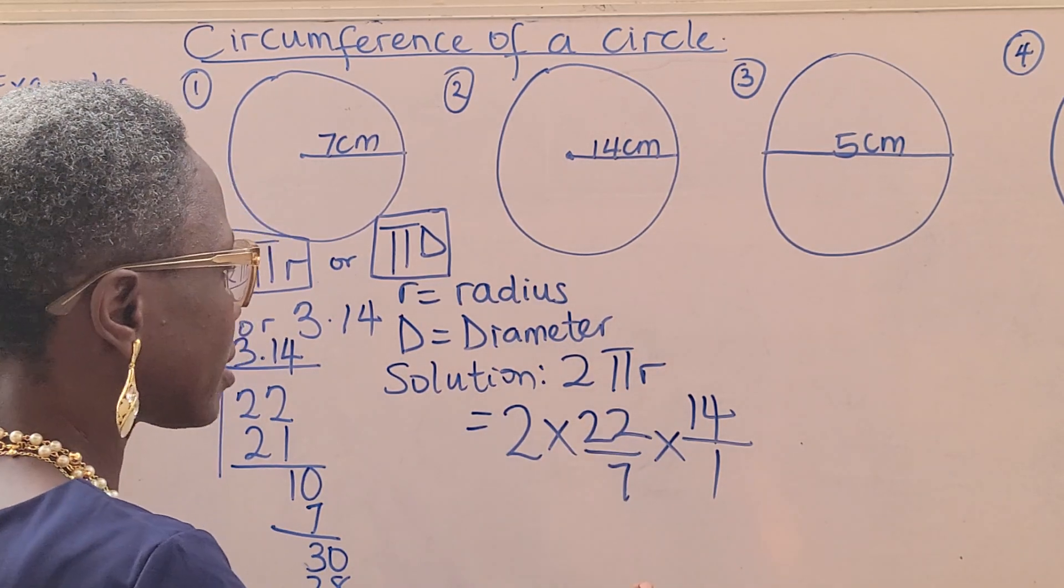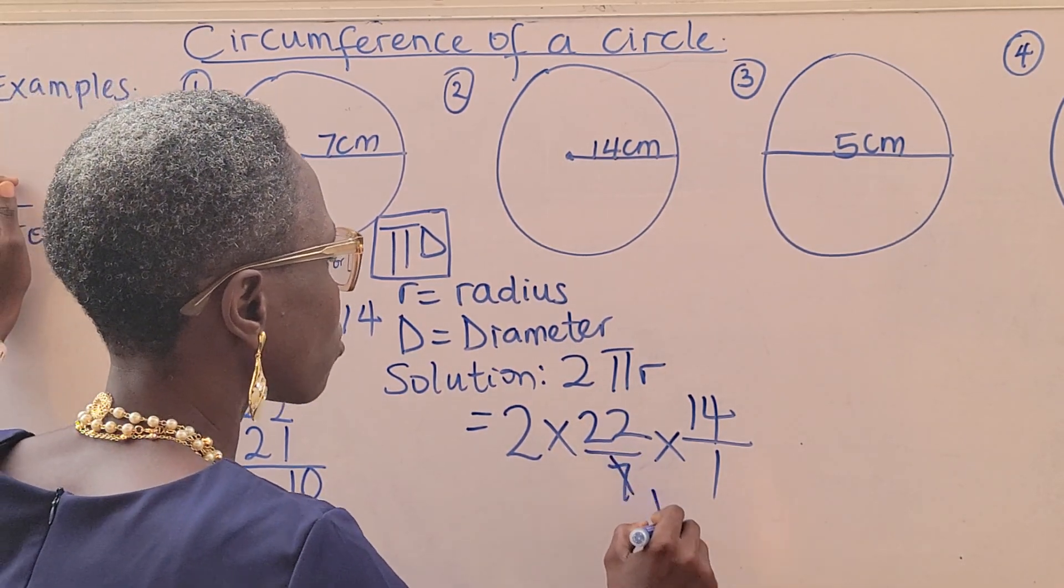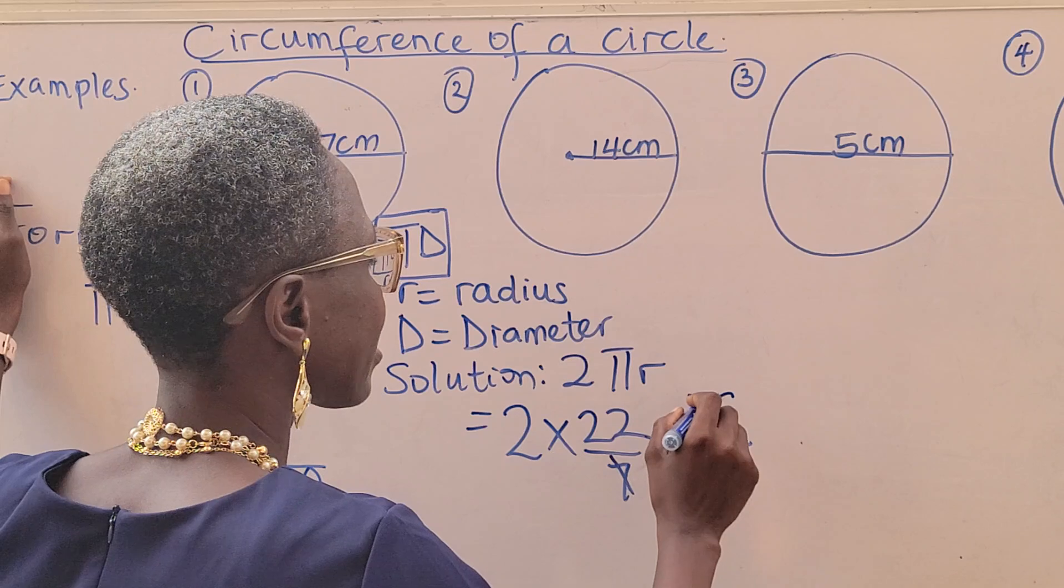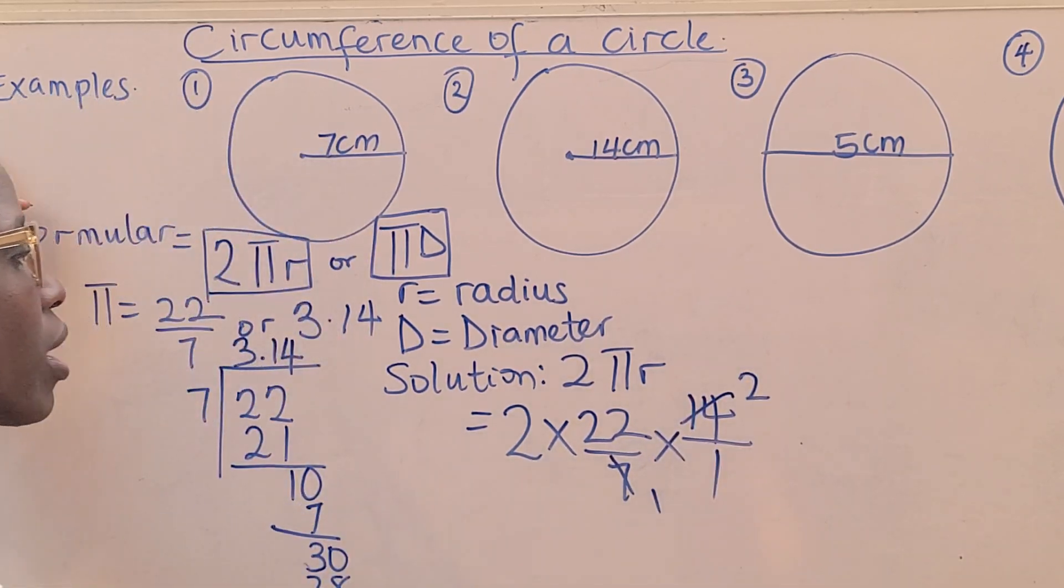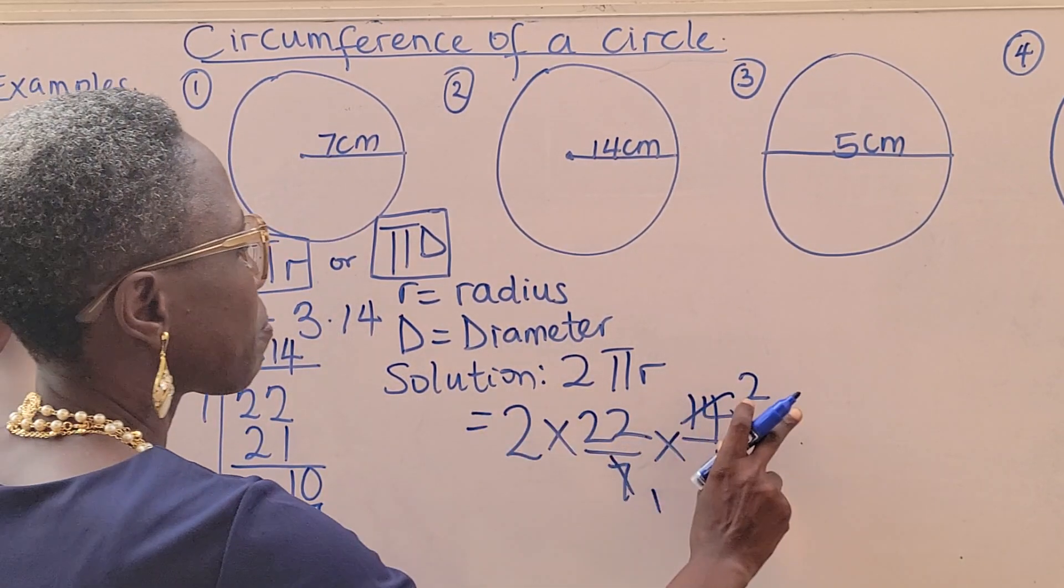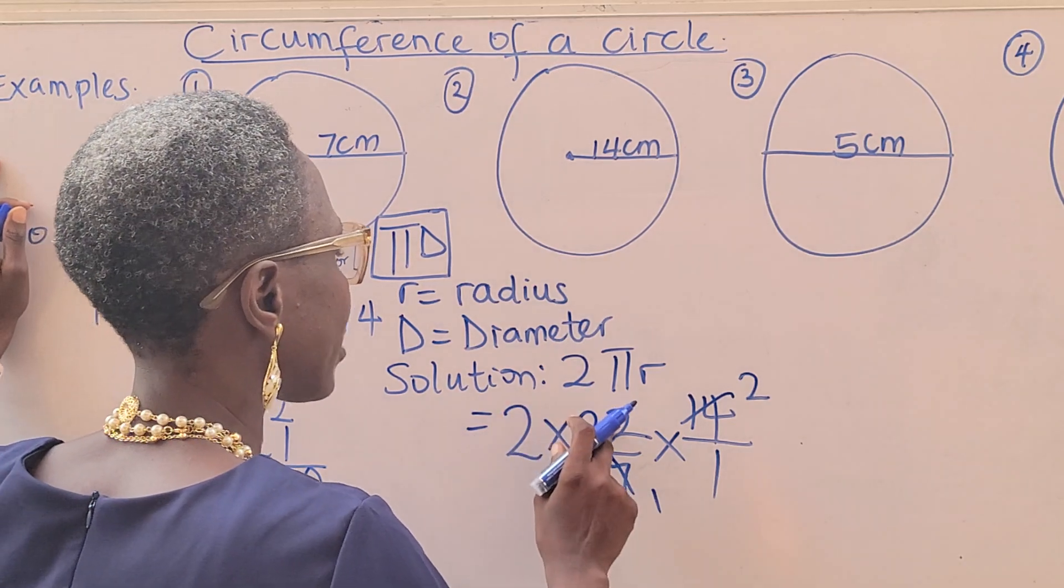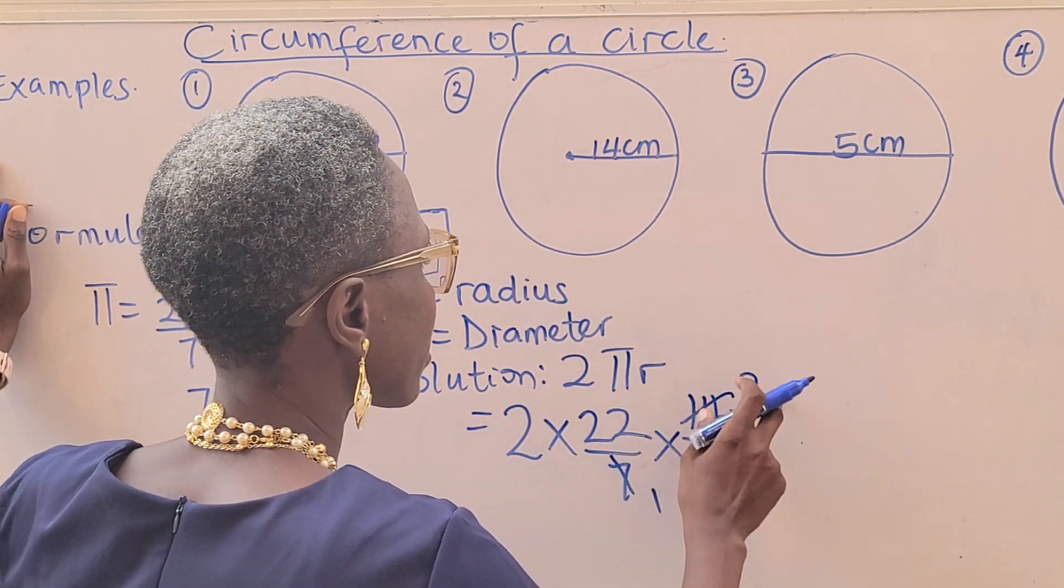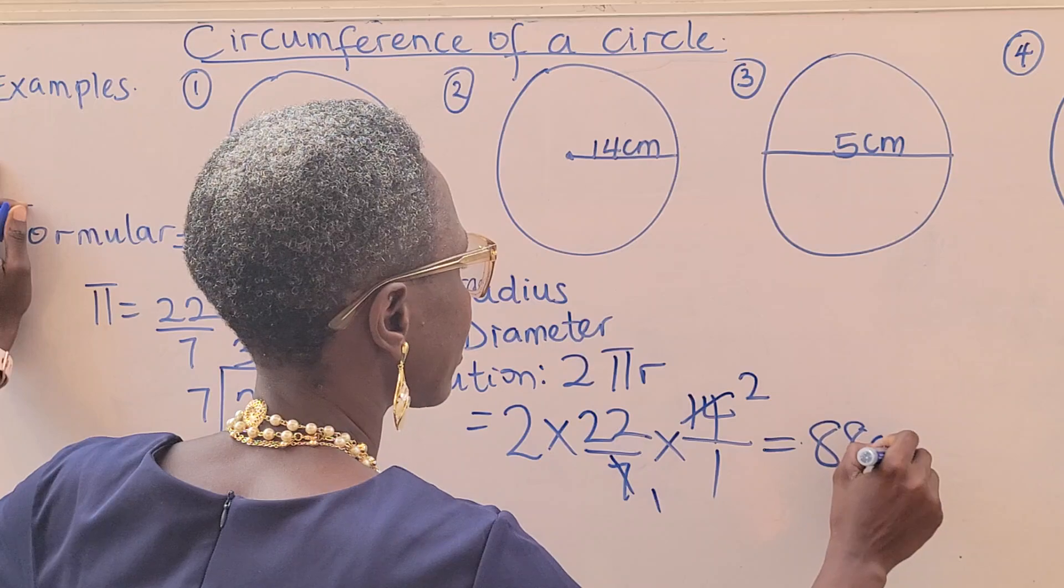We have 2πr. It's going to be 2 times π, which is 22 over 7, times 14 over 1. 7 can divide 7, 1. 7 can divide 14, 2. Once you have divided that, multiply through. 2 times 22, 44. 44 times 2, 88 centimeters.